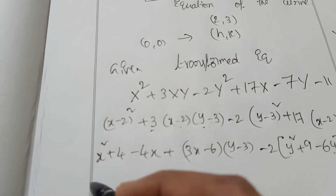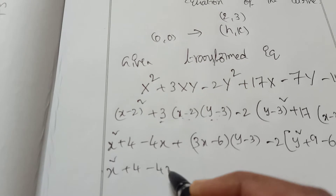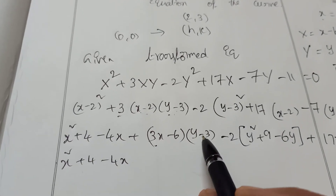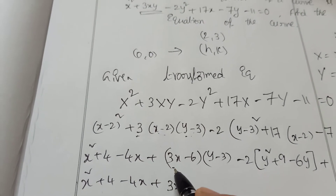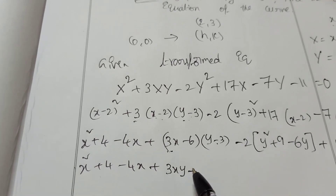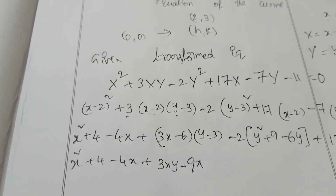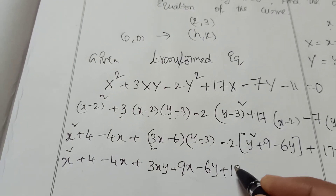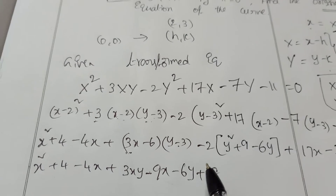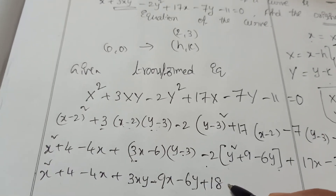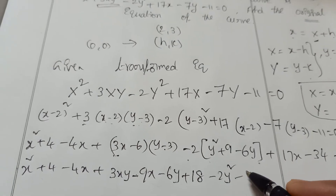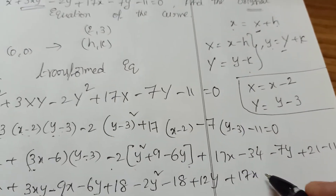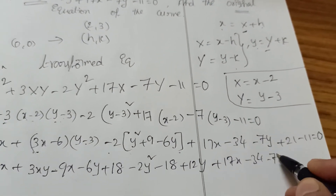Simplifying further: x square plus 4 minus 4x. Then 3x minus 6 times y minus 3 gives 3xy minus 9x minus 6y plus 18. Then minus 2y square minus 18 plus 12y. Plus 17x minus 34. And minus 7y plus 21. Minus 11 equal to 0.